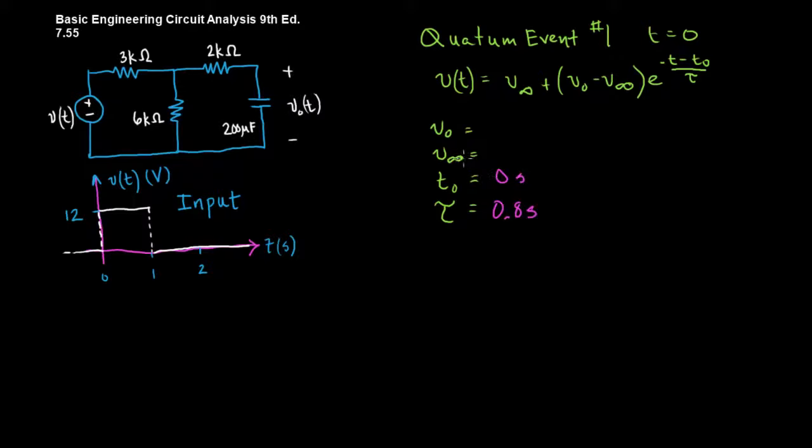T zero is defined by the quantum event that we're looking at. And it occurs at zero seconds. V at infinity. Well, what we do is we treat the quantum event as if it occurs and nothing else happens afterwards. The voltage stays at 12 volts for all time. What will happen to the voltage source? The voltage on the capacitor. This ends up acting like an open because the capacitor gets charged. And there's no current flowing through the resistor here then. And so the voltage on the capacitor will look exactly the same as the voltage on this 6k ohm resistor. So you can use voltage division and you'll find that this is 8 volts.